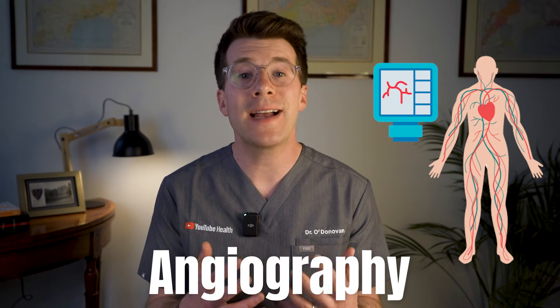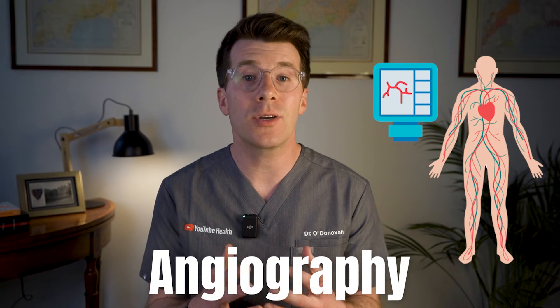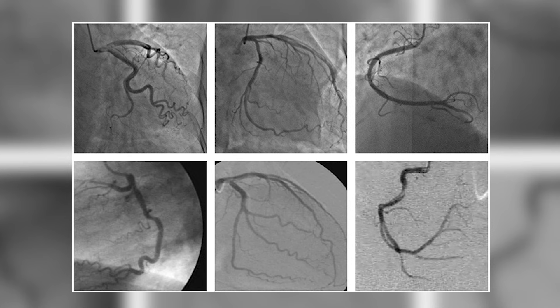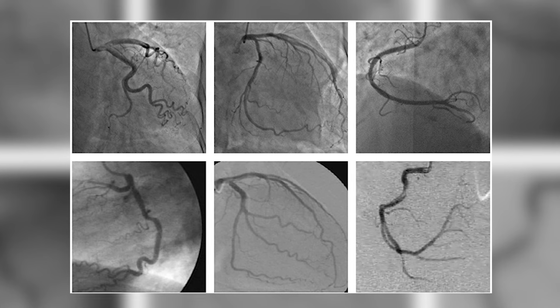Angiography is a type of x-ray used to look at blood vessels, but unlike a regular x-ray it uses a special dye to make those vessels visible. My name is Dr James Donovan, and if your doctor has recommended an angiography or you're just curious about what the test involves, then this video is going to guide you through the key things that you need to know.